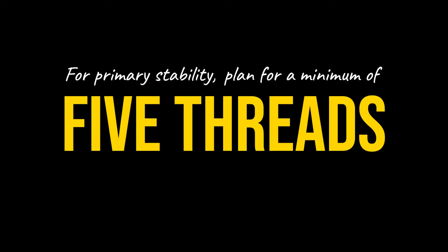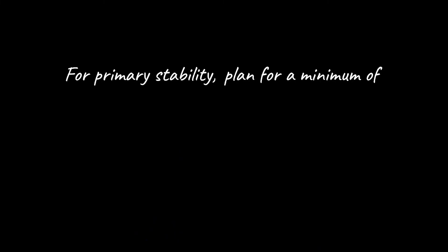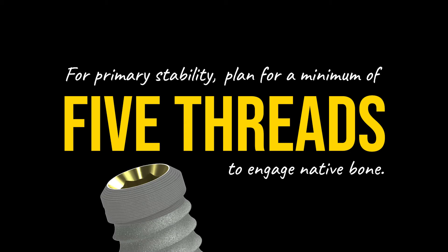So how do we do it? For primary stability, plan for a minimum of five threads to engage native bone. This is the Five Thread Rule. For primary stability, plan for a minimum of five threads to engage native bone.